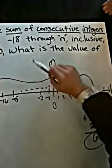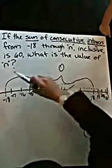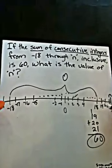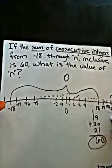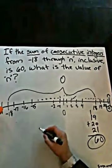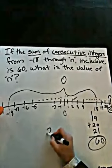Now, the question is asking, what is the value of n, or the last number? So the last number in this series, from negative 18 all the way through 21, is 21. So the answer to this problem is 21.